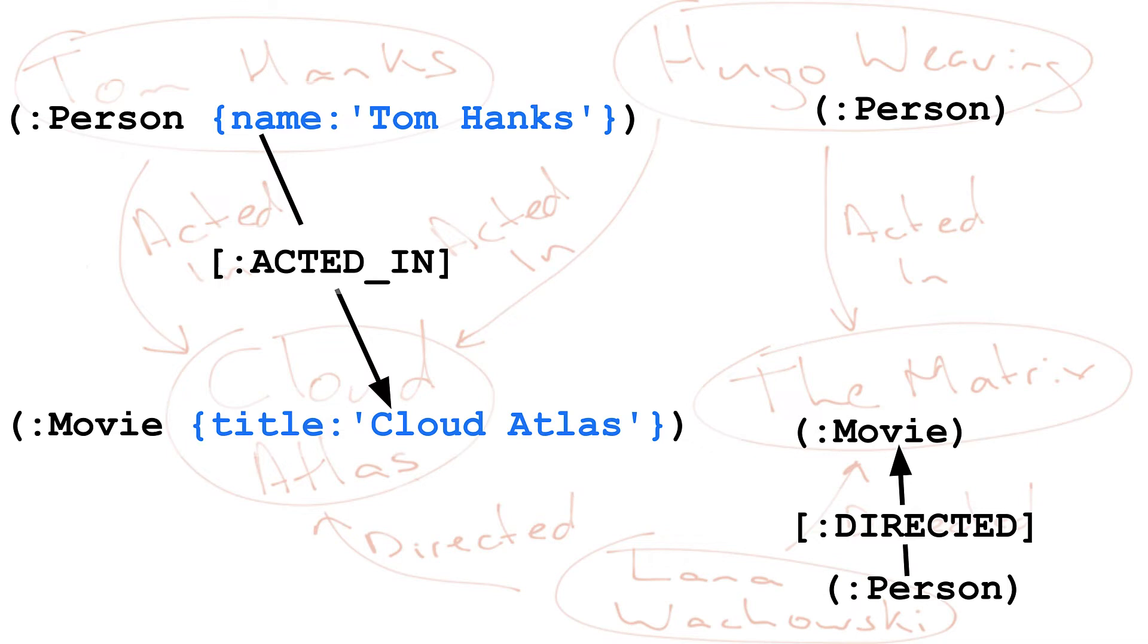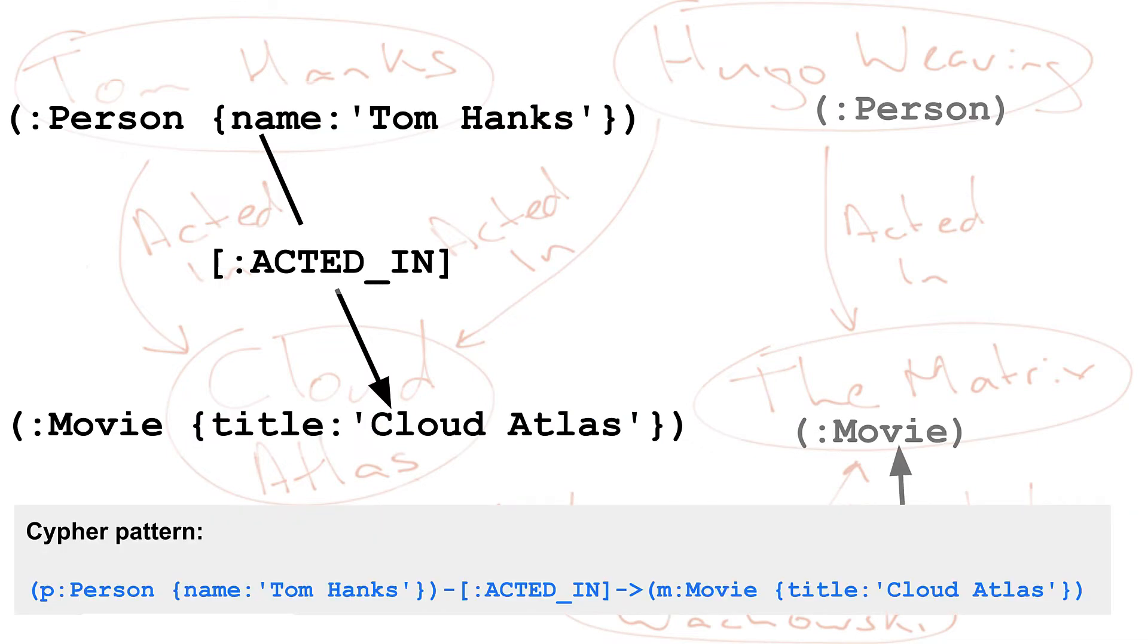You can specify a pattern in the graph. Here is a pattern that we could use to retrieve the person nodes of a person named Tom Hanks who acted in the movie Cloud Atlas.